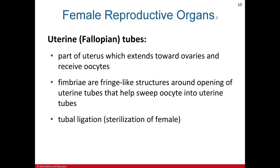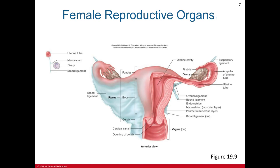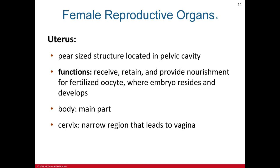The uterine tube, also called the fallopian tube, is associated with the ovaries. It extends toward the ovaries and receives the oocytes. The fimbriae are fringe-like structures around the opening of the uterine tube that help sweep the oocyte into the tube. Tubal ligation is a sterilization procedure for females. The uterus is a pear-sized structure located in the pelvic cavity; its function is to receive, retain, and provide nourishment for a fertilized oocyte, and it is where implantation occurs.